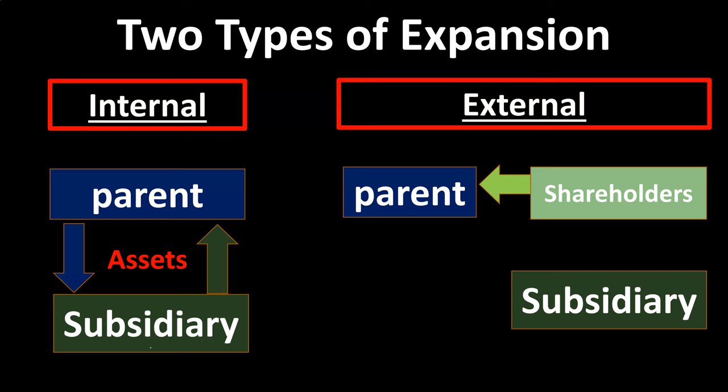We also want to think about the legal structure of the expansion. An expansion often results in a parent-subsidiary type of relationship, where we have different legal entities associated in some way. With an internal expansion, a company can create more divisions under the same overall company, or they can create subsidiaries. Most large companies will have some type of subsidiary structure, where the parent basically transfers assets and liabilities to the subsidiary.